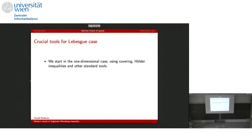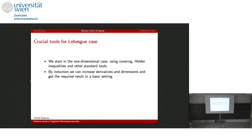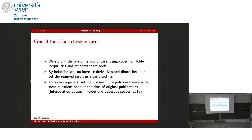I will start with how to speak about the best space in an optimal way, as this will be our guideline for the general case. We start in one dimension using actually not that hard mathematics — covering, Hölder inequality, and some other standard tools. It's the year 1959 and some of the tools we use were not even defined yet. Then by induction we can go to higher dimensions and increase derivatives to have j and k as large as we need. Then if we want general theta we just use interpolation between the spaces — on one hand the Sobolev inequality, on the other the j-over-k Gagliardo-Nirenberg inequality.